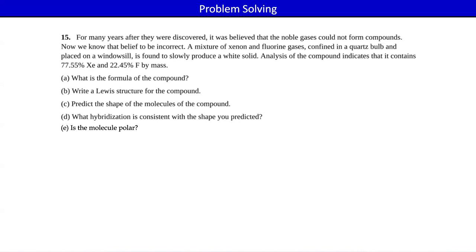What's the formal charge for the xenon in the middle? How many electrons does it own? Six that it owns outright plus one more from each of the bonds — total of eight. And how many does it have on the periodic table? Eight. Formal charge of zero. Which is why this is a stable compound — xenon was already stable, and it's also relatively stable like this. It also makes the fluorine more stable than having fluorine attached to itself.